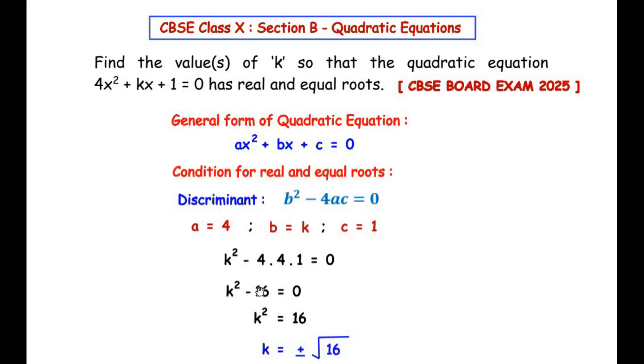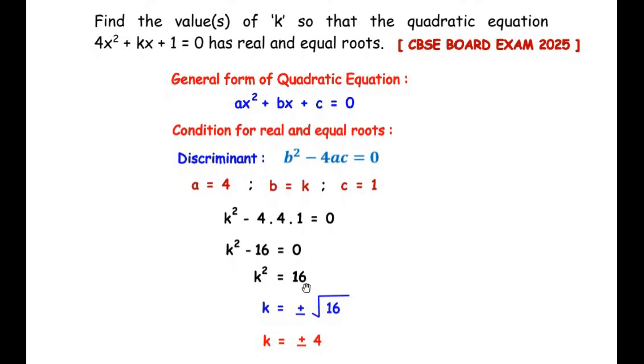Let us take -16 on the right-hand side. We get k² is equal to positive 16. Now let us take the square on the other side of the equal sign. We get k is equal to plus or minus square root of 16.